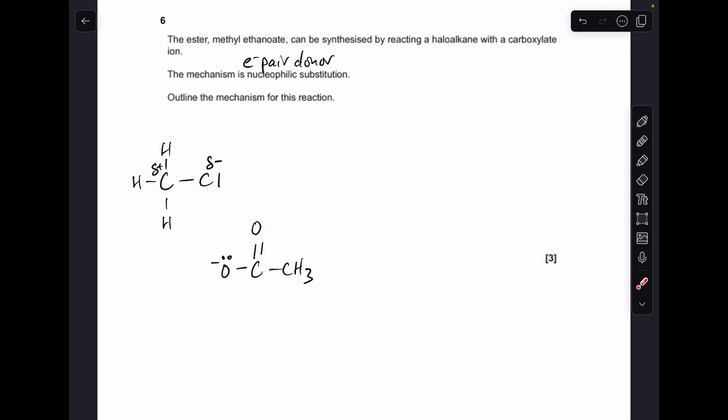The ethanoate ion can do that. It's got a lone pair on that O- part, and it's going to donate that lone pair of electrons to this slightly positive carbon. Remember, the carbon-halogen bond is polar because chlorine is highly electronegative.